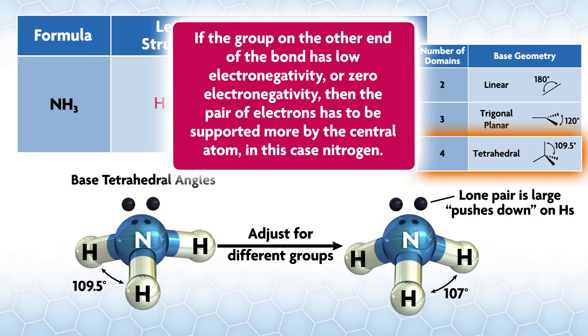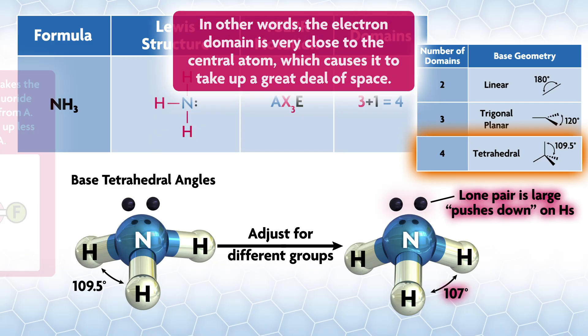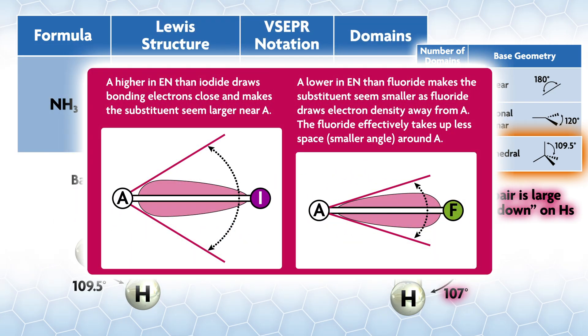We can think of a lone pair as being a bond to a group with an electronegativity of zero. If the group on the other end of the bond has low electronegativity or zero electronegativity, then the pair of electrons has to be supported more by the central atom (in this case nitrogen). In other words, the electron domain is very close to the central atom, which causes it to take up a great deal of space.